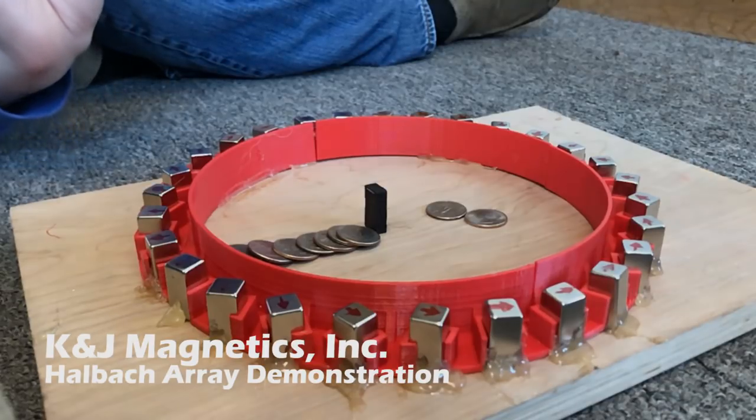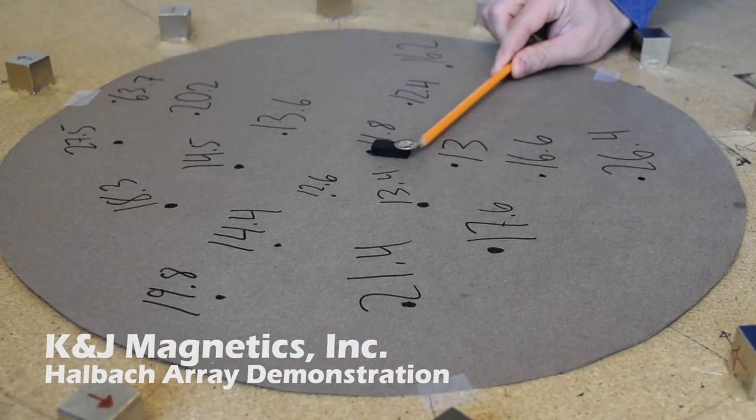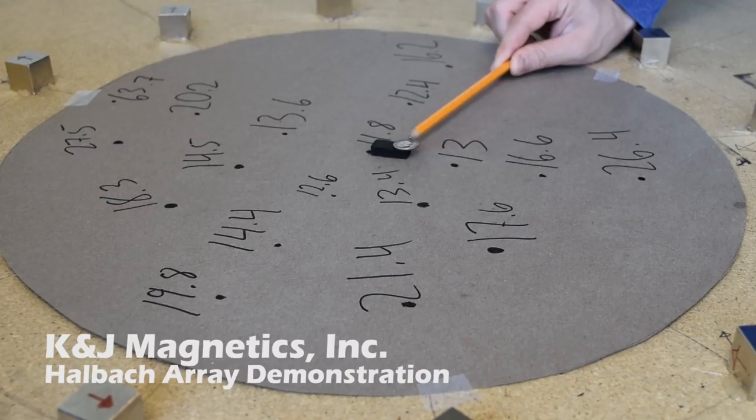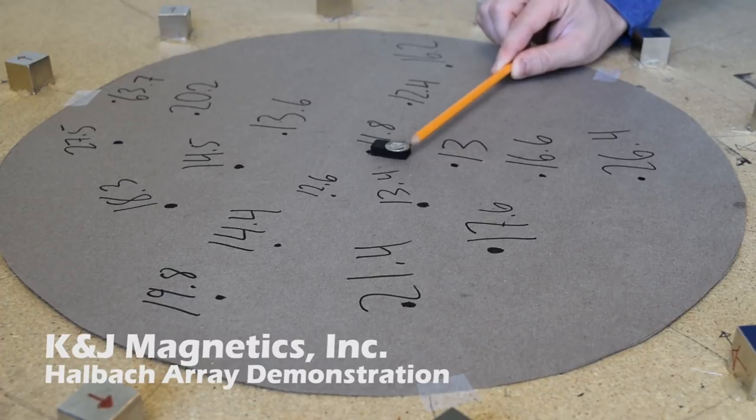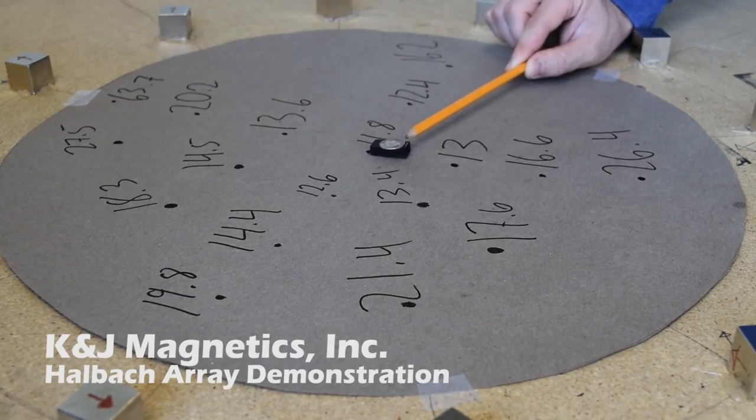Now, if we take this same exact magnet and put it in a weaker magnetic field, it doesn't take nearly as much force to hold it down. The magnetic torque acting on it is a lot weaker. Here a single dime can hold it down.